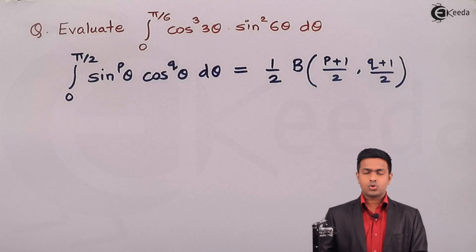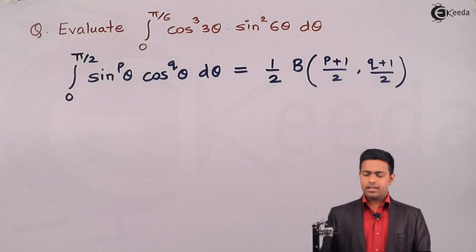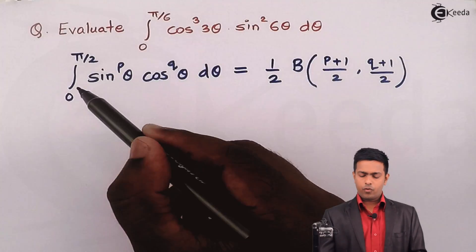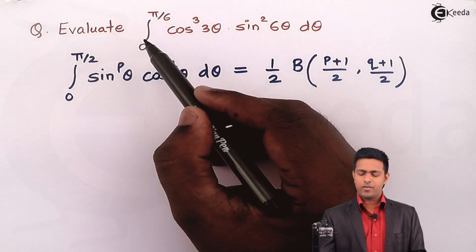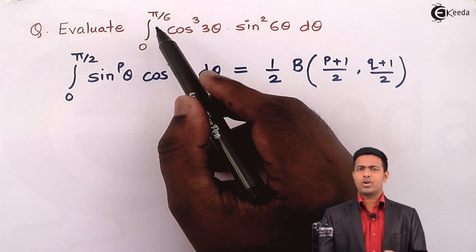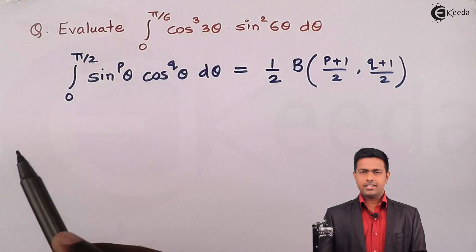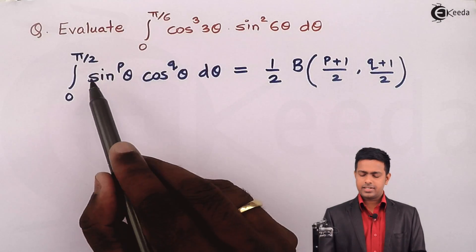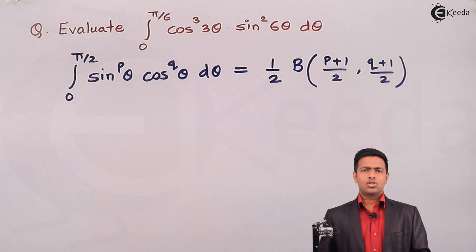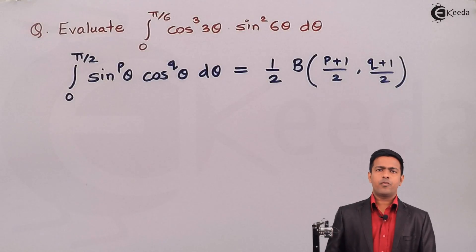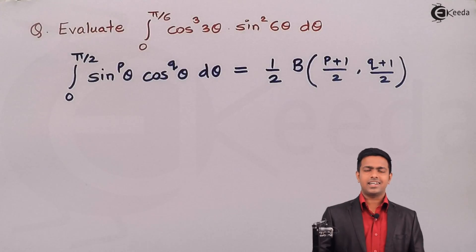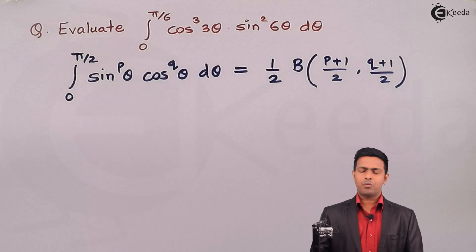Before starting, observe a few things. First, we want integration from 0 to π/2, whereas here we have from 0 to π/6. So we need to convert the limit to 0 to π/2. Also, the angle with sine and cosine should be θ, but here we have 3θ and 6θ, so we need to do a few substitutions to get the angle as θ and the limit from 0 to π/2.